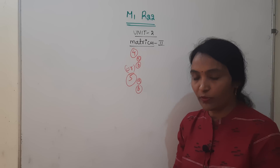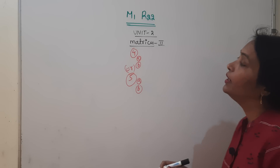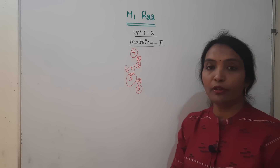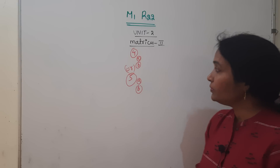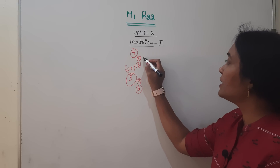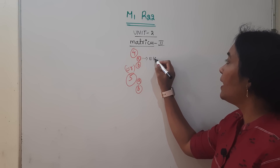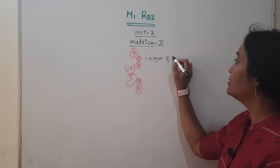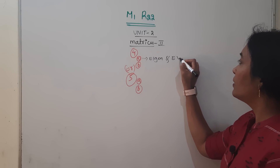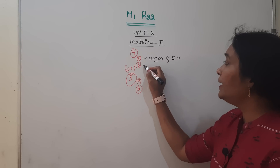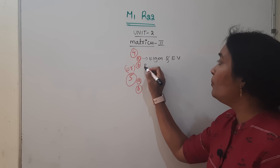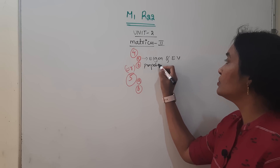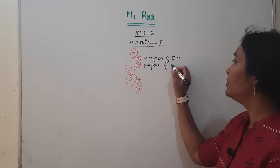First, Eigen Vectors — Eigen Vectors and here, Properties of Eigen Values. These are key topics for Unit 2.